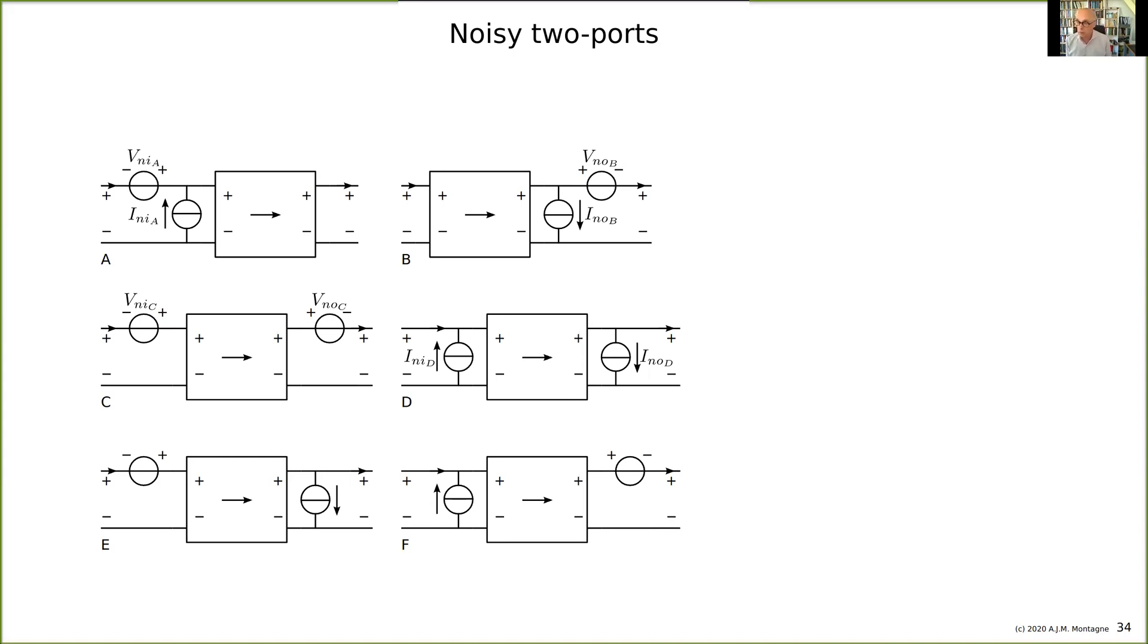You can do two at the input, two at the output B, one at the input one at the output can be voltage type, one at the input one at the output can be current type, then you have C and D, and the other hybrid notations: voltage input current out, and current input voltage out. That are six ways of representing the noise behavior of two ports.